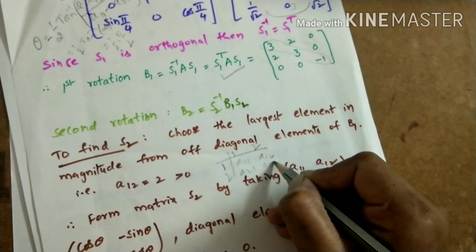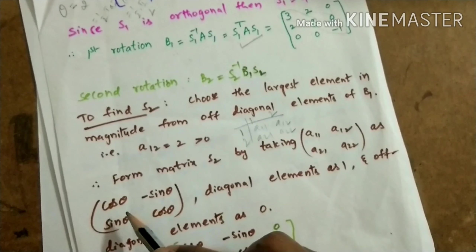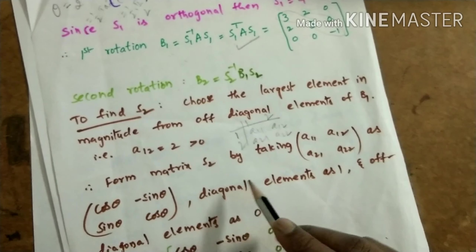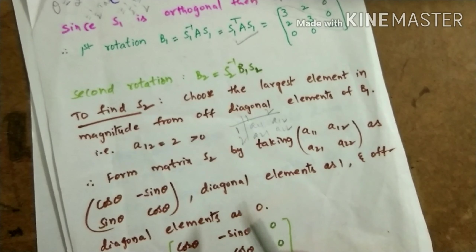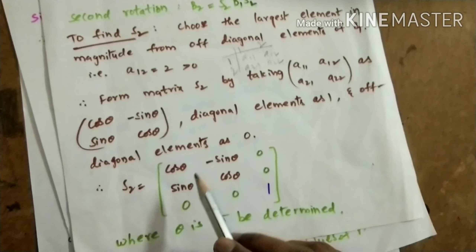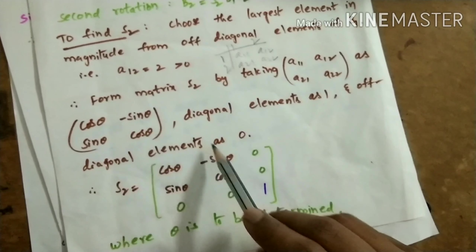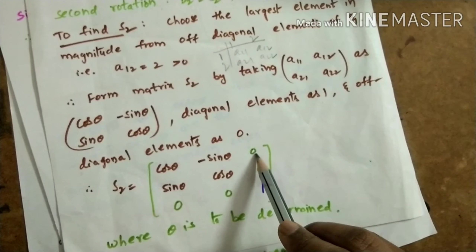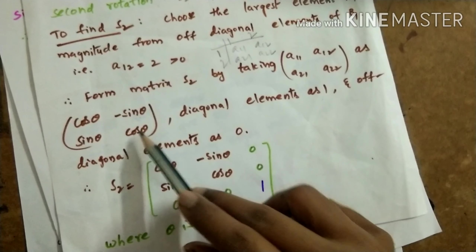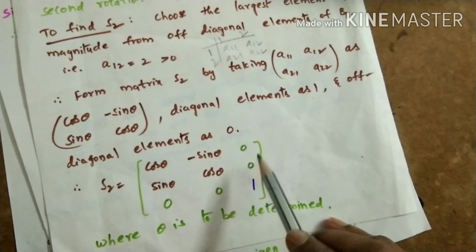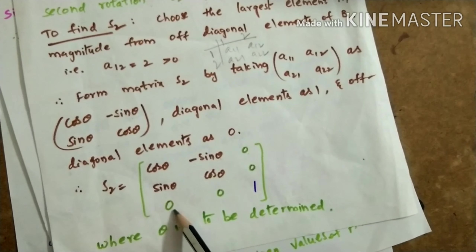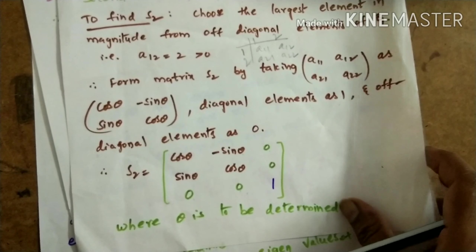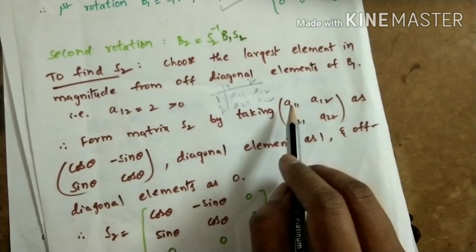For element A₁₂, we take row 1 and column 2 both horizontally and vertically, giving elements A₁₁, A₁₂, A₂₁, A₂₂. These four elements are replaced by cos θ, −sin θ, sin θ, cos θ respectively. In the 3×3 matrix S2 all remaining diagonal elements become 1 and off-diagonal elements become 0, so S2 = [cos θ, −sin θ, 0; sin θ, cos θ, 0; 0, 0, 1].